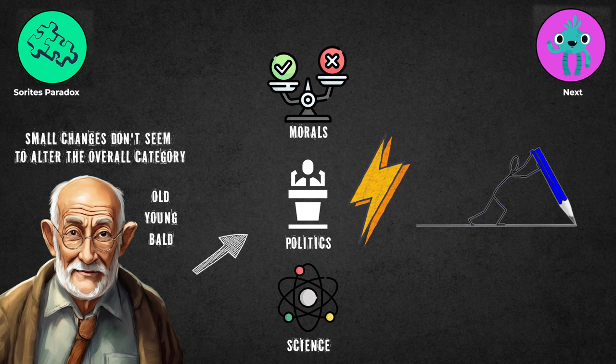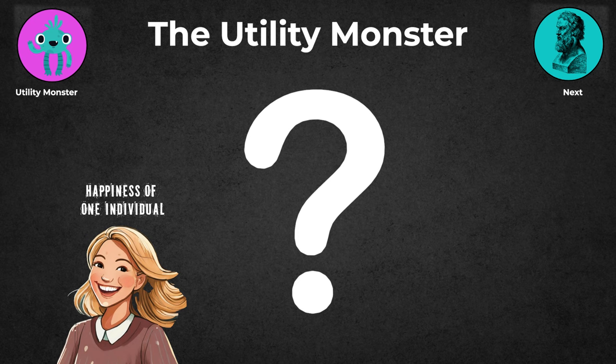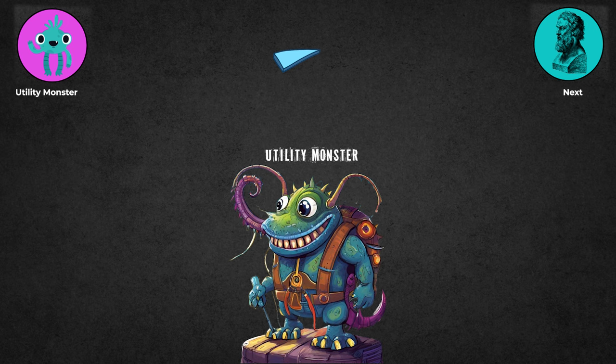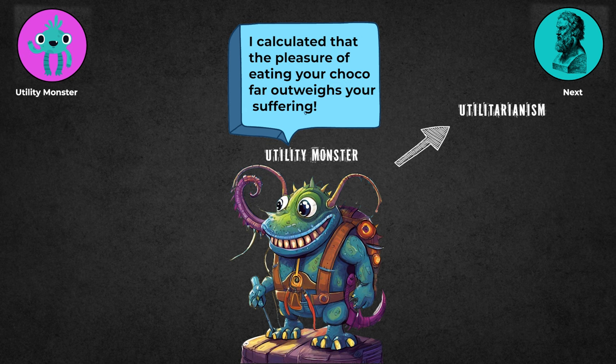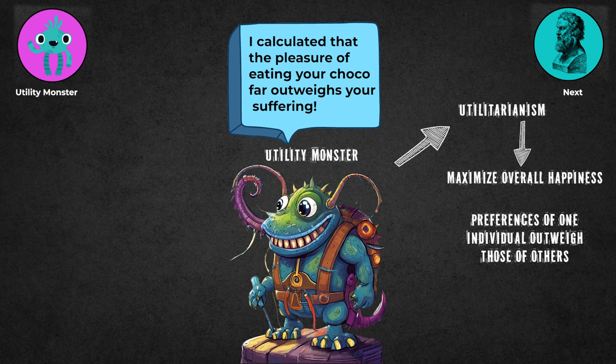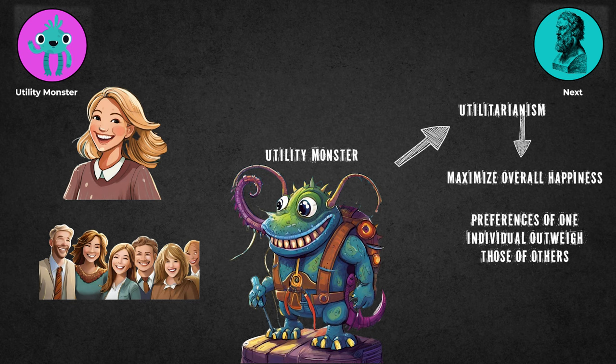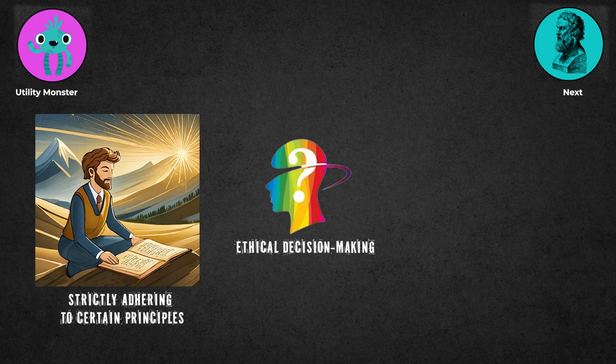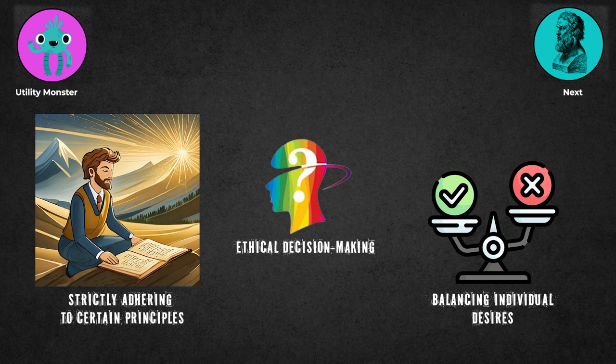The Utility Monster raises the question of whether the happiness of one individual should outweigh the combined happiness of many others. It presents a hypothetical creature, the utility monster, who derives vastly more pleasure from resources than others do. This scenario challenges utilitarianism, an ethical theory that aims to maximize overall happiness. It suggests that the preferences of one individual, the utility monster, should outweigh those of others. This raises concerns about prioritizing individual desires over the well-being of many. It tests our understanding of ethical decision-making and the consequences of strictly adhering to certain principles. It prompts reflection on balancing individual desires with the greater good in moral reasoning.